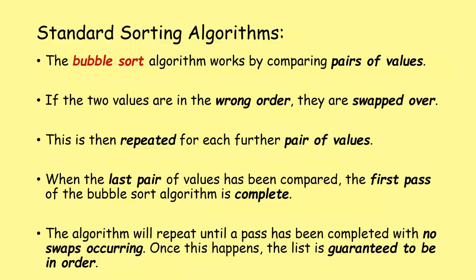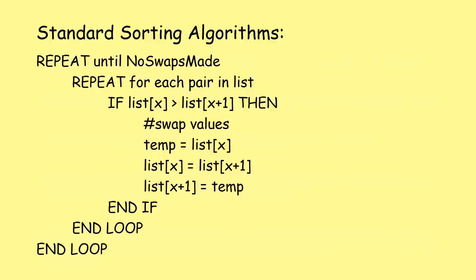Next we have sorting algorithms, starting with bubble sort. Bubble sort works by comparing pairs of values. If the two values are in the wrong order, they're swapped. This is repeated for each further pair. When the last pair has been compared, the first pass is complete. The algorithm repeats until a pass has been completed with no swaps occurring - once this happens, the list is guaranteed to be in order.